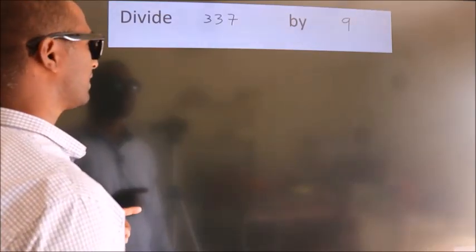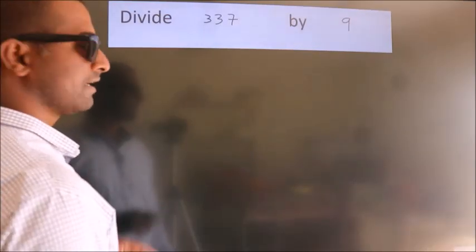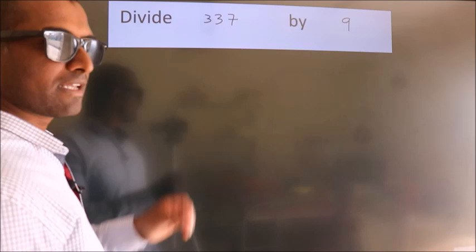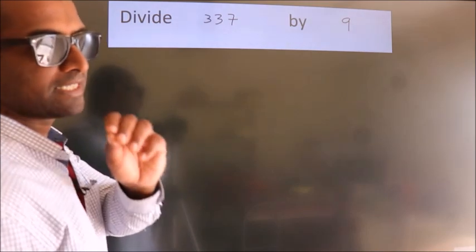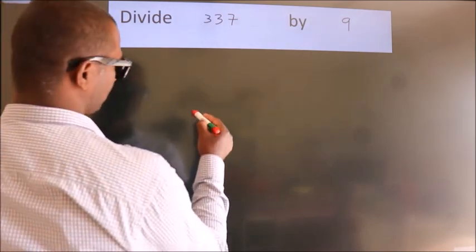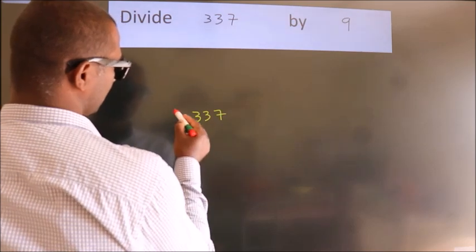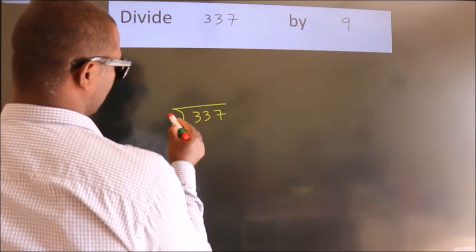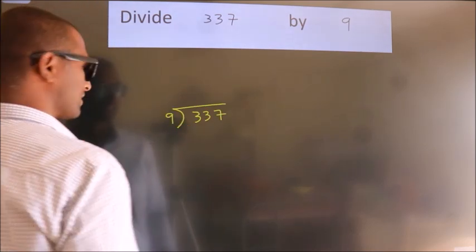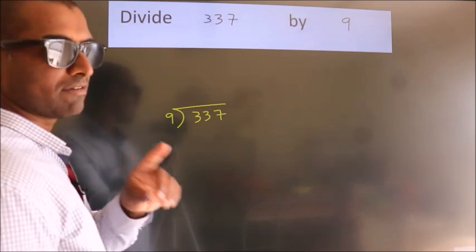Divide 337 by 9. To do this division, we should frame it in this way. 337 here, 9 here. This is your step 1.